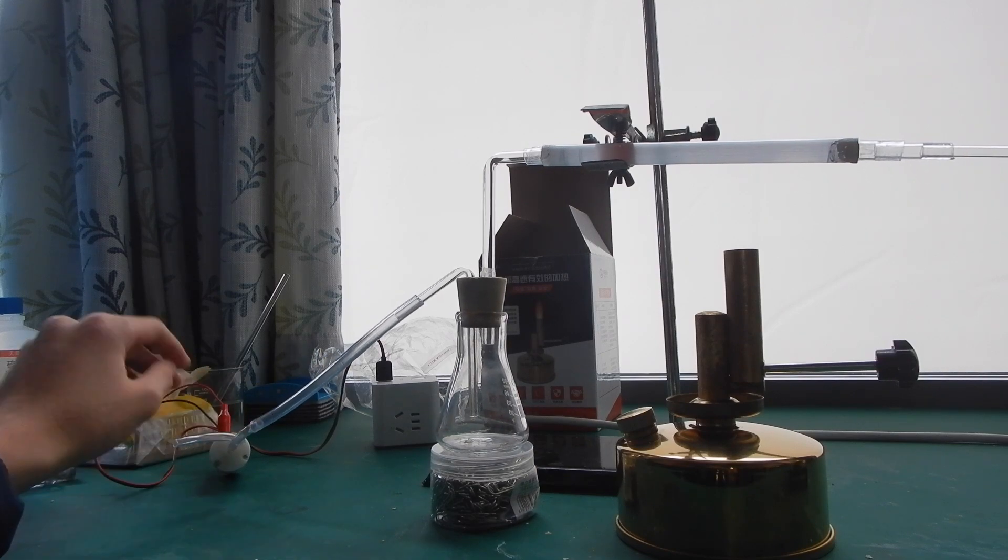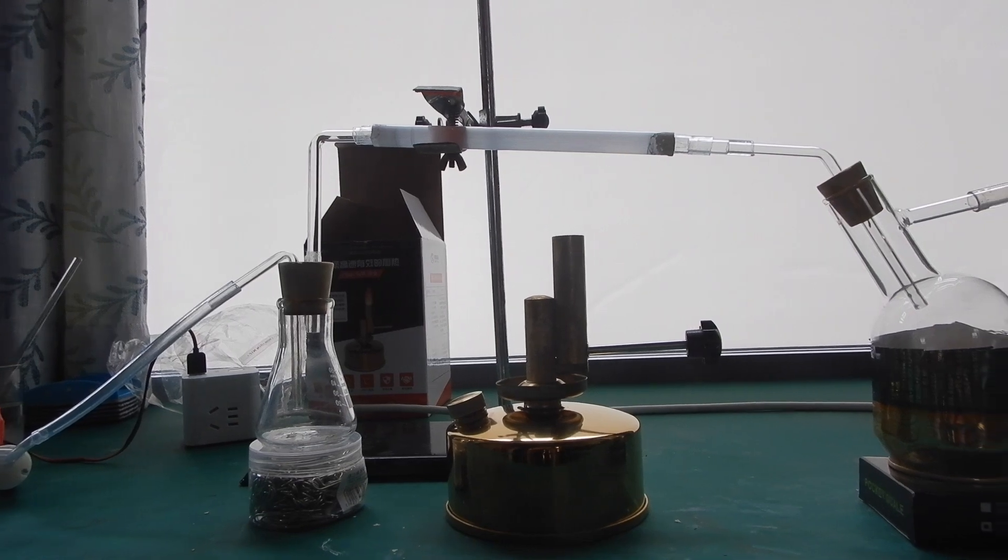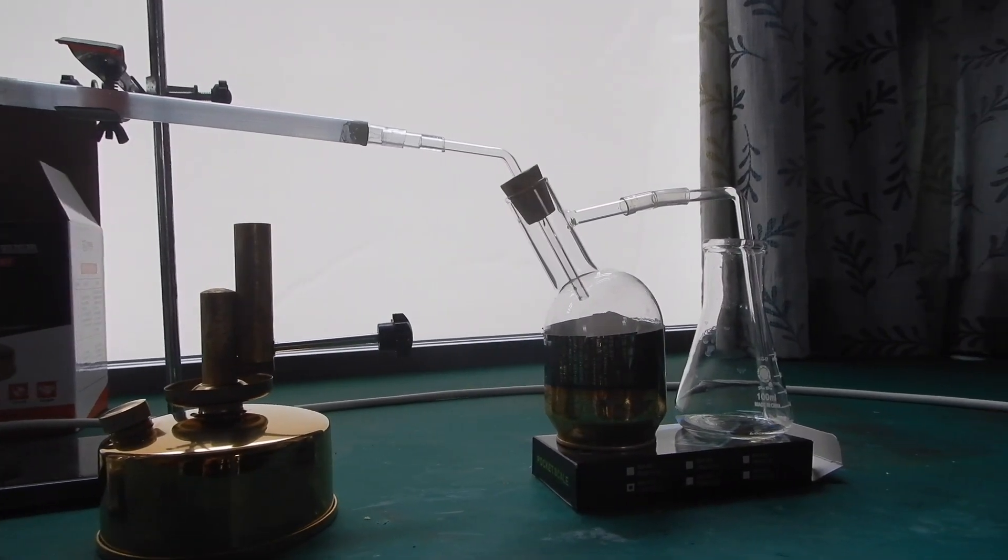Here is what the final apparatus looks like. After the quartz tube, there is a round bottom flask for oxidation, and finally a conical flask to absorb the product.